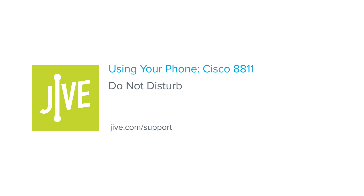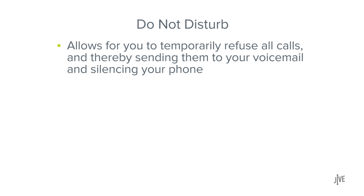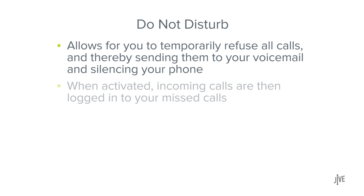In this video, you will learn how to enable and disable the Do Not Disturb feature on a Cisco 8811 phone. Do Not Disturb allows you to temporarily refuse all calls, sending them to your voicemail and silencing your phone. When activated, incoming calls are then logged into your missed calls.